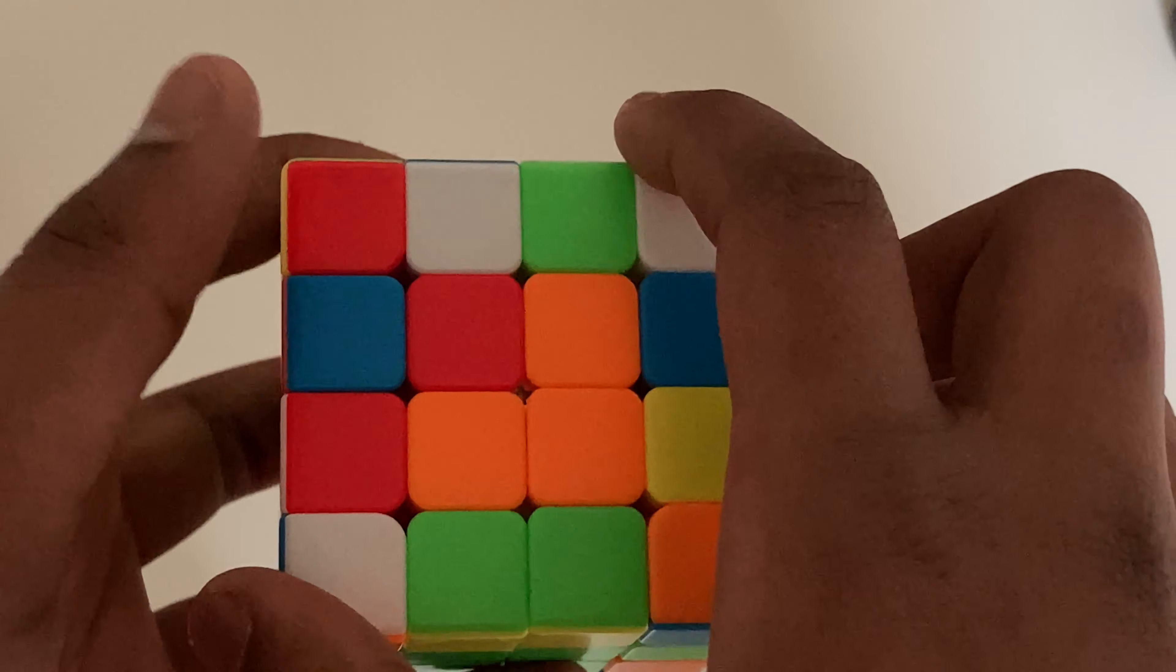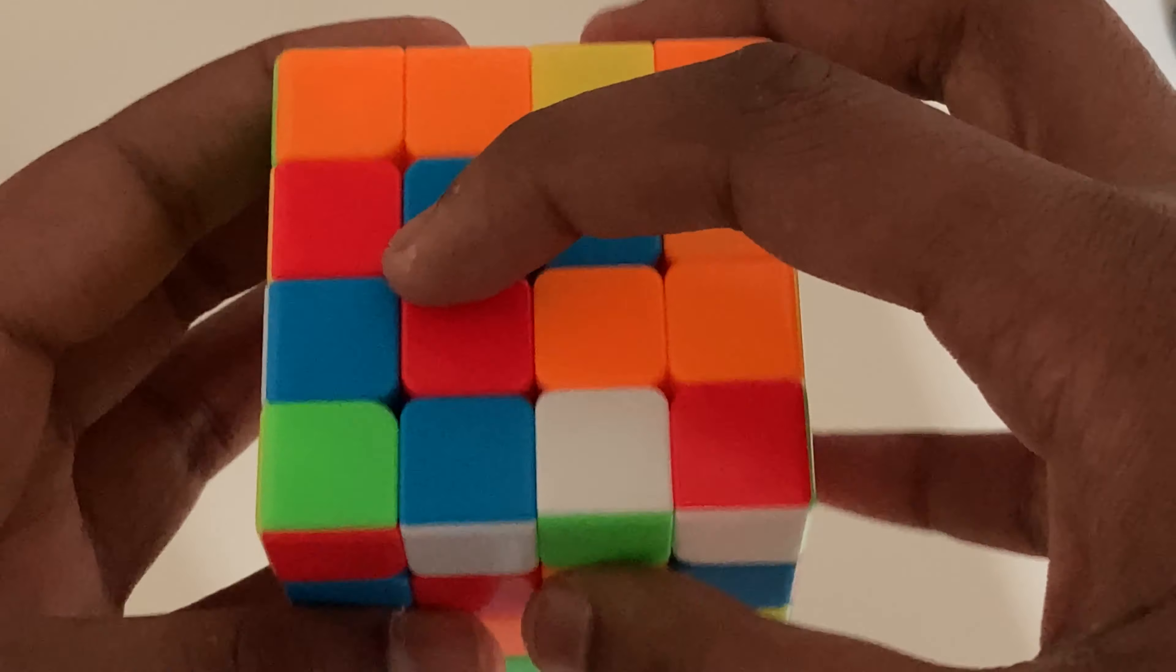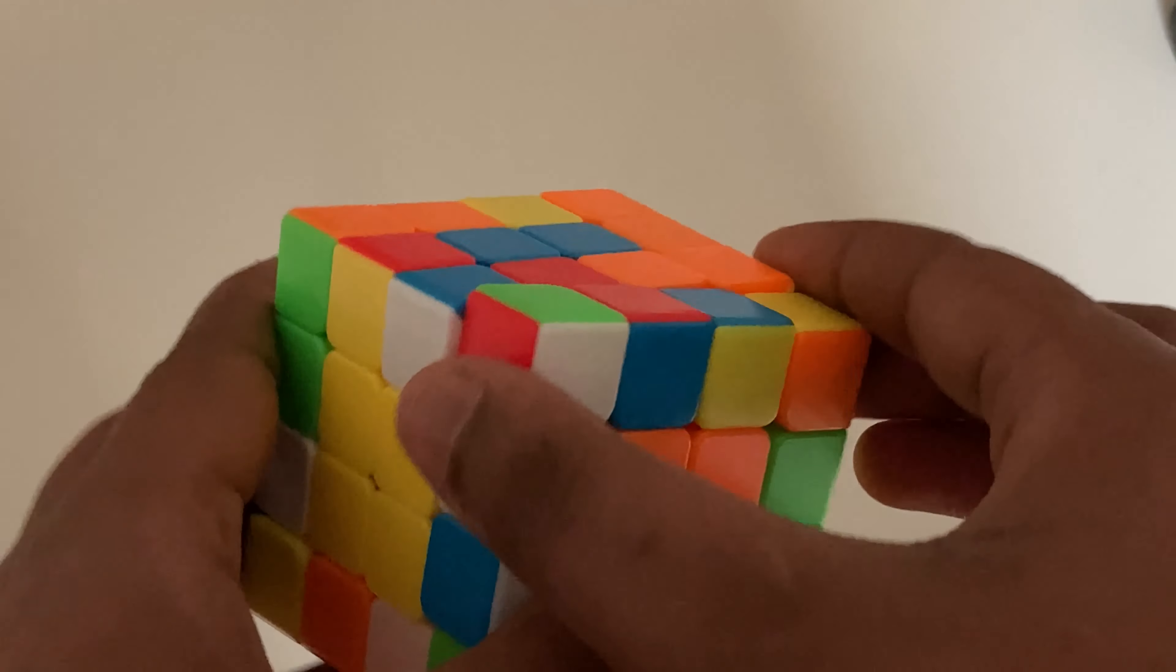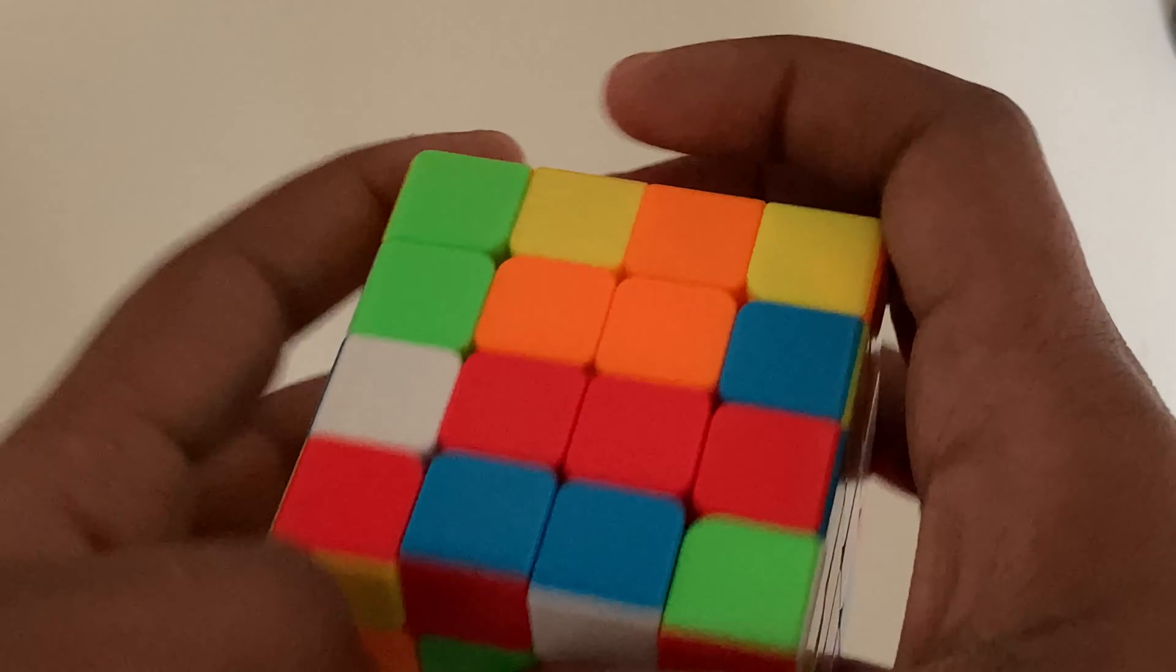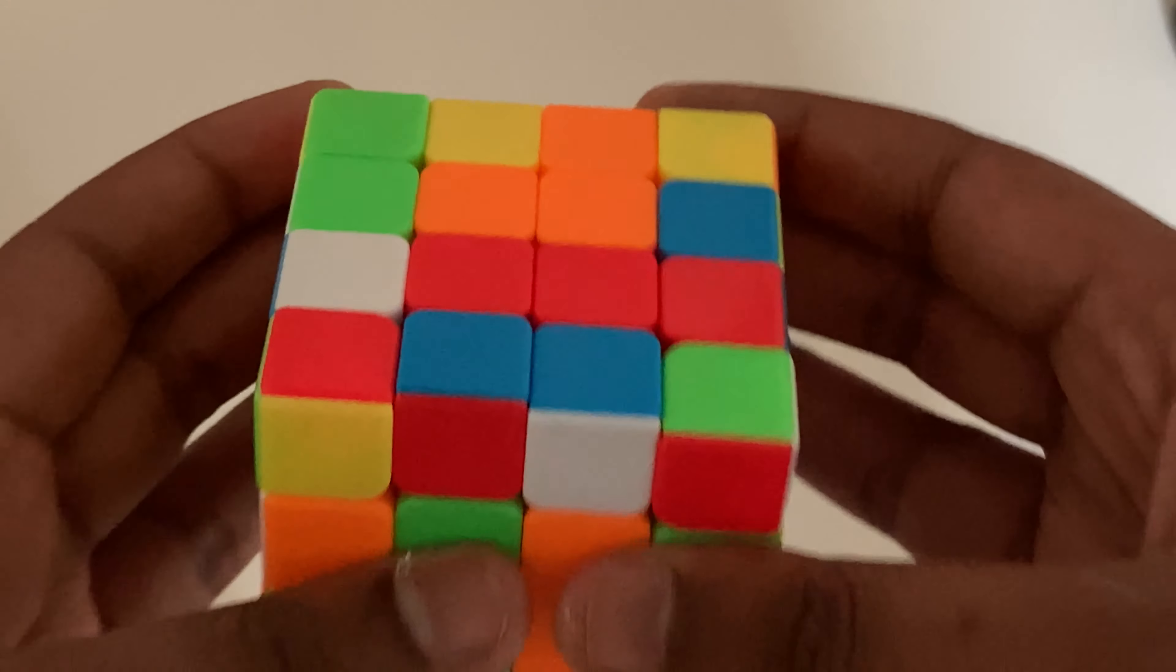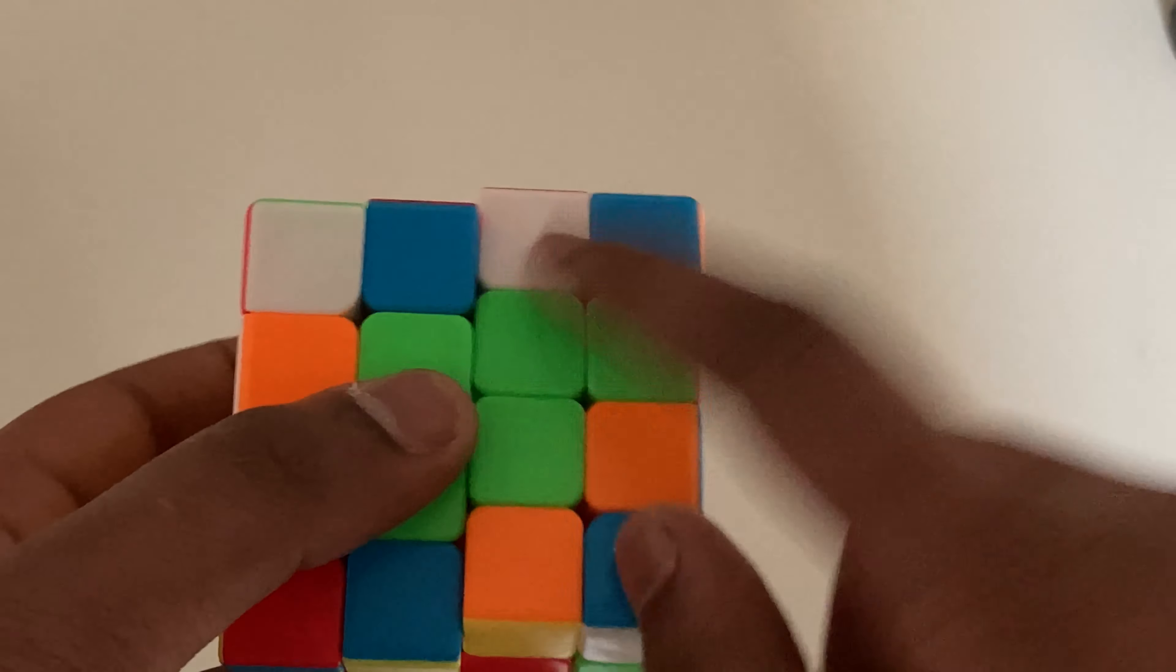So we already have one red, so what we can do is we can find the other red, and then we can go like this. But then it's going to ruin our green, so what we've got to do is we're just going to move it over to the side, and then we can put it back.